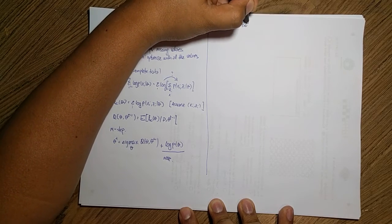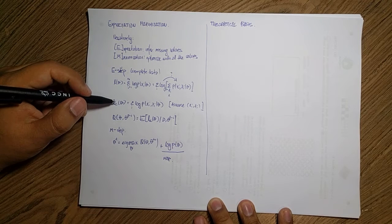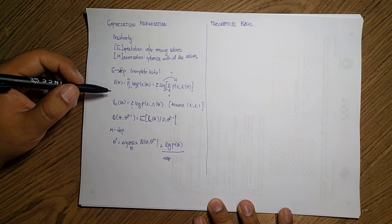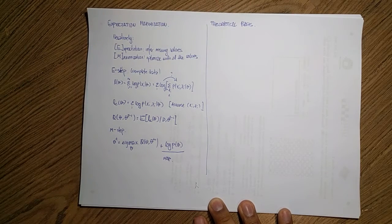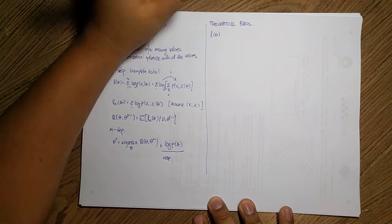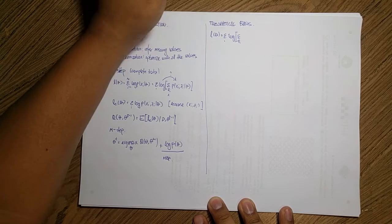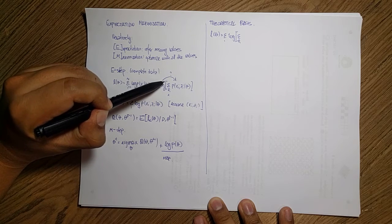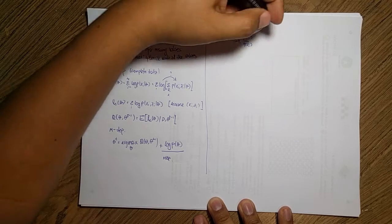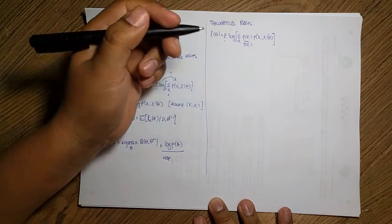Let's analyze the theoretical basis for this derivation. Consider the likelihood and use a trick: assume we have some positive distribution Q and multiply and divide the likelihood by Q(C_i) over Q(C_i), which is basically one. We then multiply by P(X_i, C_i). This trick is also used in variational inference, and it lets us apply Jensen's inequality to find a bound.